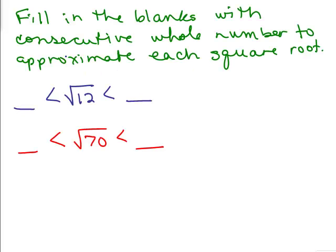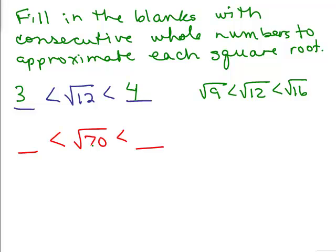Fill in the blanks with consecutive whole numbers to approximate the value of each square root. Square root of 12 — you think of the perfect square under 12, which is 9, so it should be between 3 and 4. The reasoning: square root of 9 is less than square root of 12, which is less than square root of 16. How about square root of 70? The perfect square under 70 is 64, so it must be between 8 and 9, because square root of 64 is less than square root of 70 is less than square root of 81.